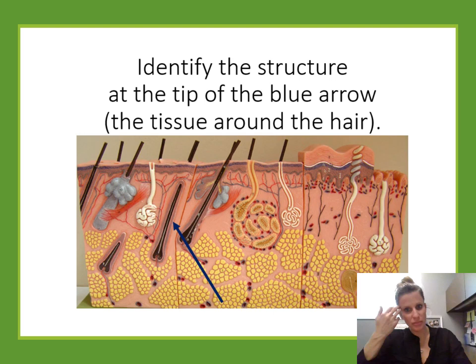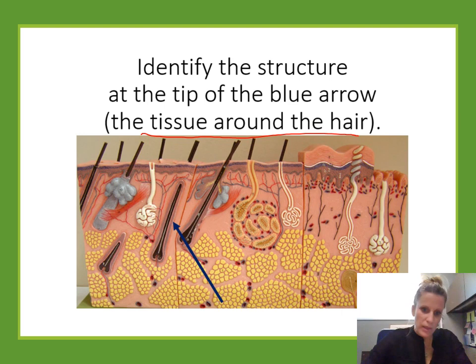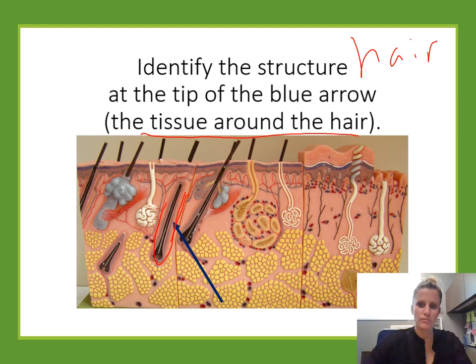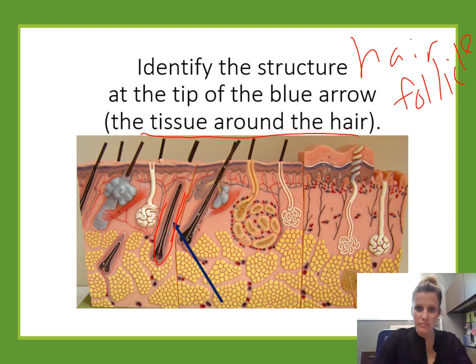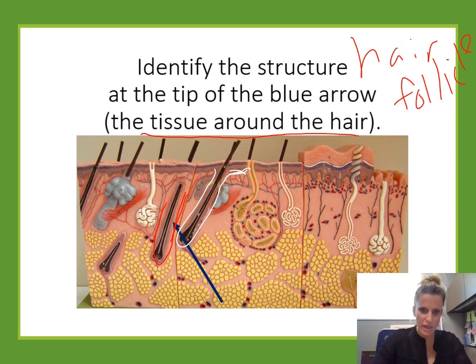Identify the structure at the tip of the blue arrow — the tissue around the hair. Around the root of the hair, there's a light purple casing that wraps around it. That's the hair follicle. The stratum basale of the epidermis extends down and goes around the root of the hair, forming the hair follicle.